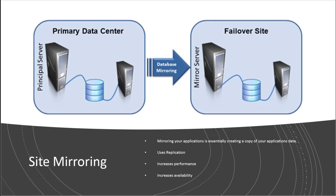We want to take a look at mirroring. What database mirroring does is create a copy of our database, which can increase both performance and availability. Essentially, we have an application running a database that we mirror into an AB application configuration that is live, giving us an alternate site to use for production at the same time.